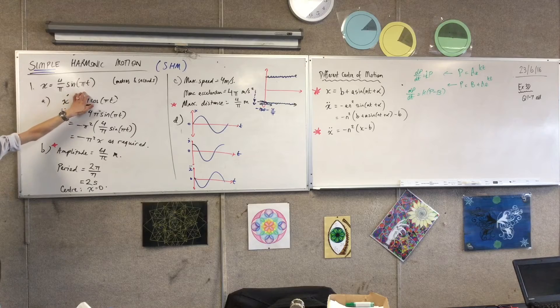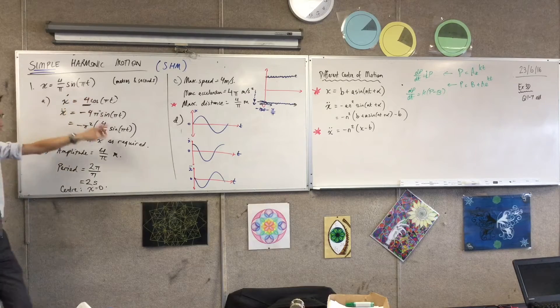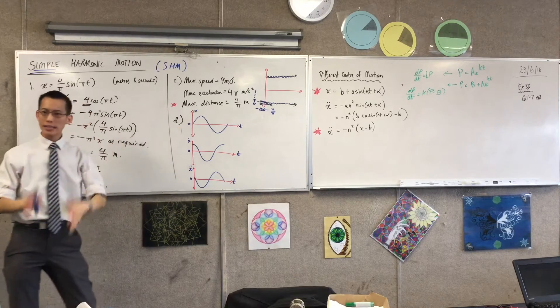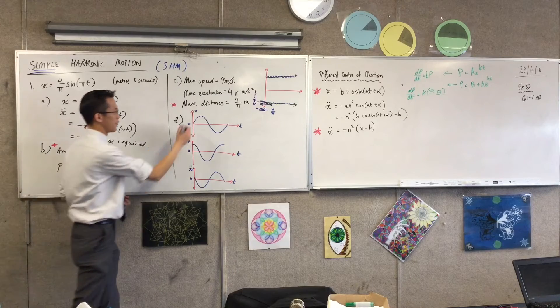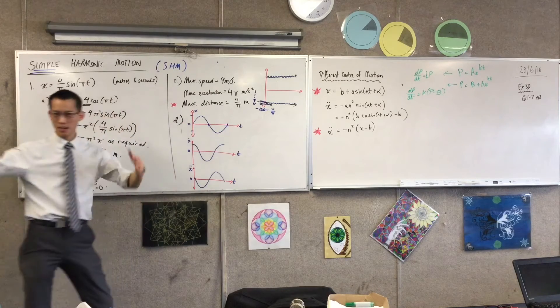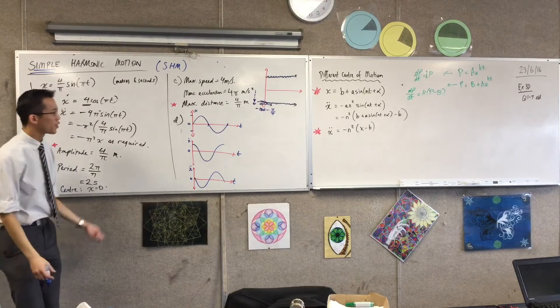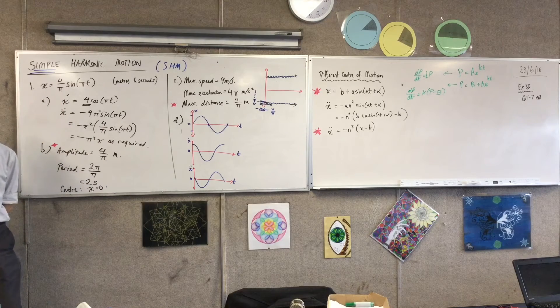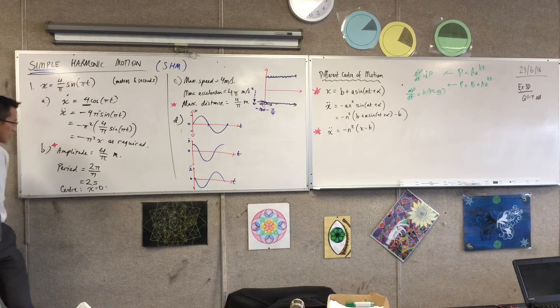It starts at the origin because there's no phase shift to worry about. Okay, so there I am. All I need to worry about in terms of actual scale and points that tell me width, height, that kind of thing, they're all things we worked out in parts A and B, right? That's A and B. Have a look.